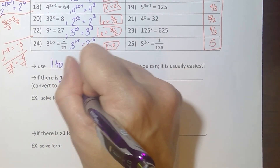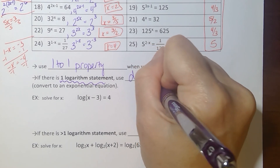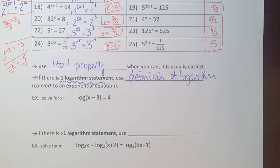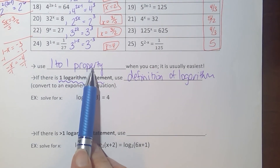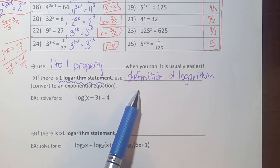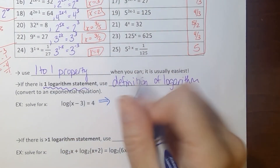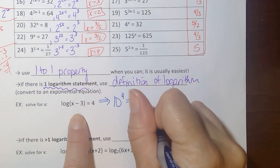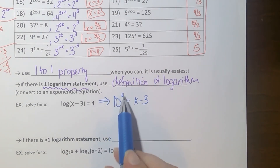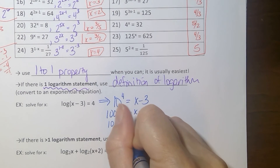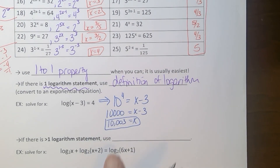If there is one log statement, use your definition of logarithm. The definition of logarithm lets you rewrite your log statement in exponential form every single time. For example, with the common log of x minus 3 equals 4, the base is 10, so 10 to the 4th equals x minus 3. Since 10 to the 4th is 10,000, adding 3 gives x equals 10,003. Checking: that argument is valid, so it's a correct solution.